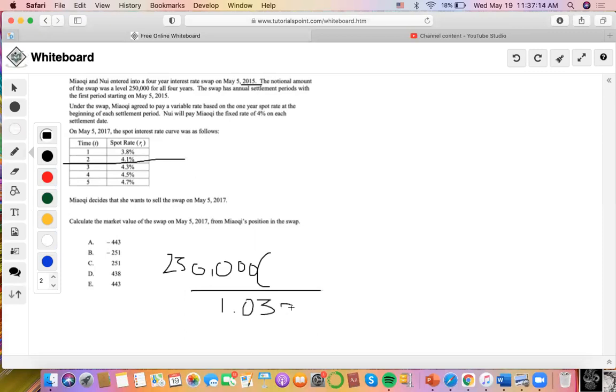Then we're going to take the fixed rate of what she receives minus the variable rate that she pays, and determine how much of a profit she gets on the notional amount today in one year.